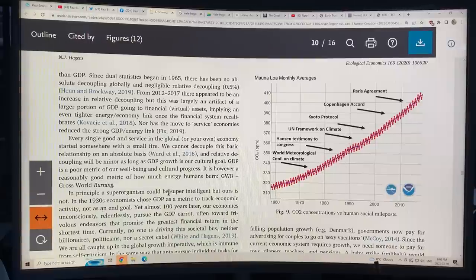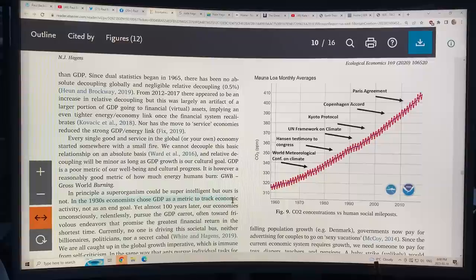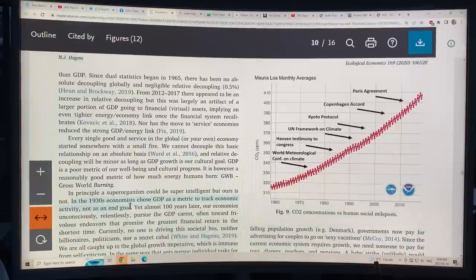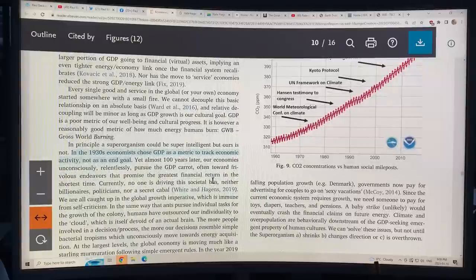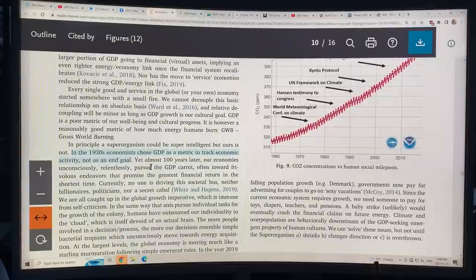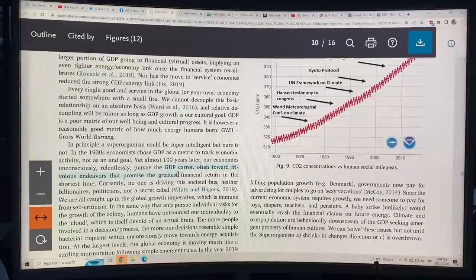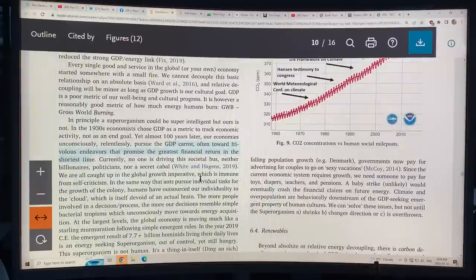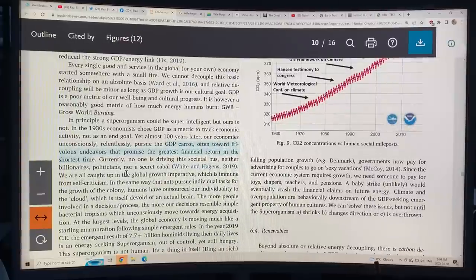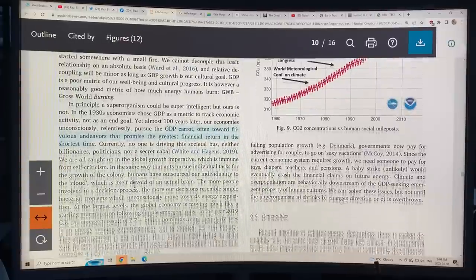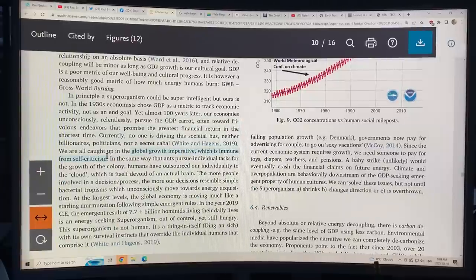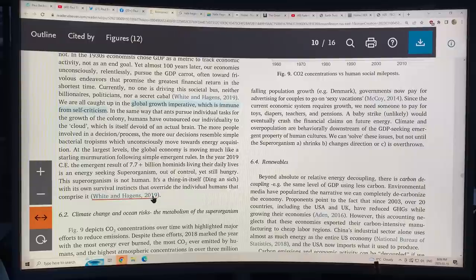In principle, a super organism could be super intelligent, but ours is not. In the 1930s, economists chose GDP as a metric to track economic activity, not as an end goal. Almost a hundred years later, our economies unconsciously, relentlessly pursue the GDP carrot, often toward frivolous endeavors that promise the greatest financial return in the shortest time. No one's driving the societal bus, not politicians, billionaires, a secret cabal. We're all caught in this global growth imperative, which is immune from self-criticism.